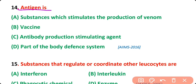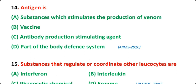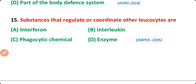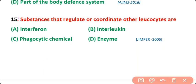Question number 14: Antigen is a substance which stimulates the production of venom or vaccine, antibody production stimulating agents, or parts of the body defense system? The correct answer is option C. Antigen is an antibody production stimulating agent in the body.